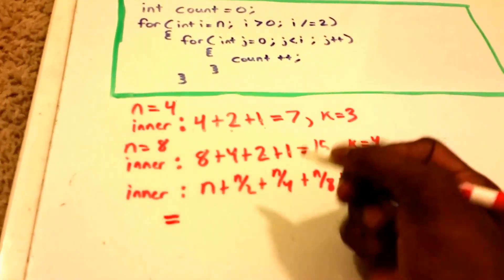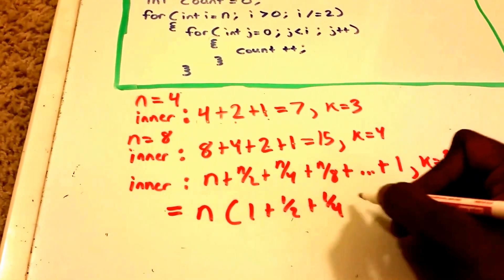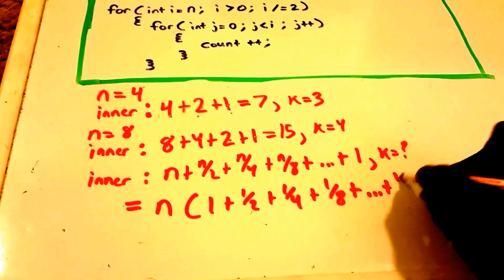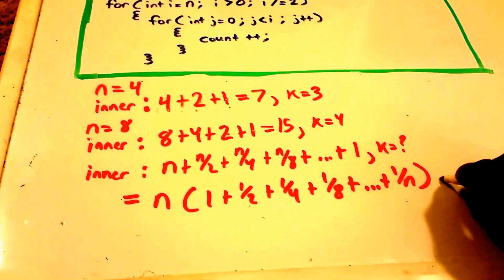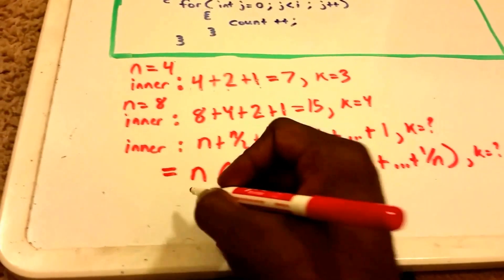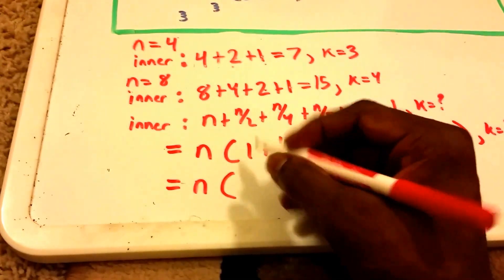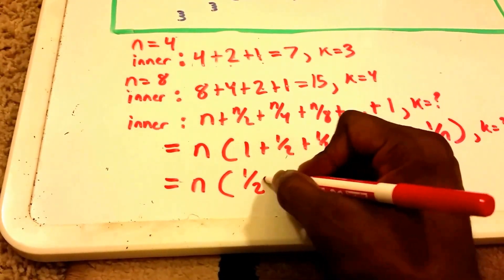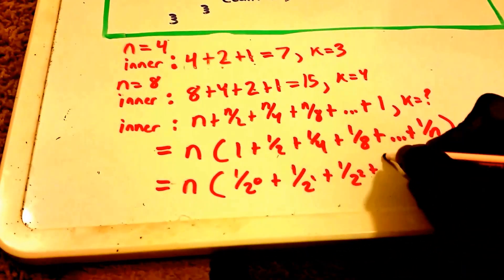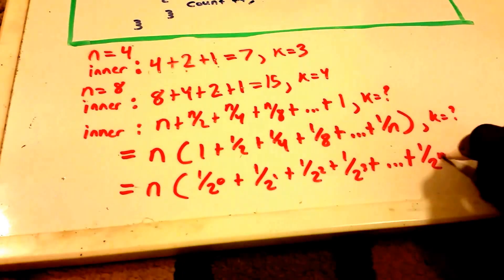To prove this more rigorously, we can factor out n and write the series as n times (1 + 1/2 + 1/4 + 1/8 + ... + 1/n). We can then rewrite each term as a power of two: n times (1/2^0 + 1/2^1 + 1/2^2 + 1/2^3 + ... + 1/2^(k-1)).